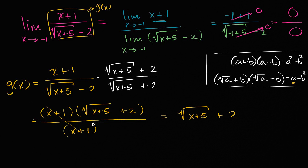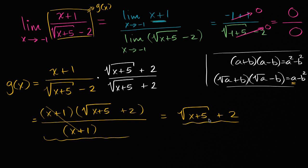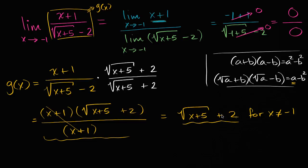Some of you might feel something is off here, and you'd be correct. Is this definitely the same thing as what we had before canceling the x plus ones? The answer is: as written, it is not exactly the same thing. It is the same everywhere except at x equals negative one. This simplified form is defined at x equals negative one, but g of x is not. So to make it truly the same function as g of x, we must say: for x not equal to negative one.